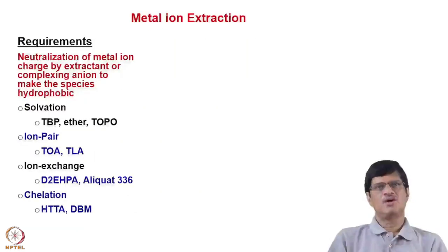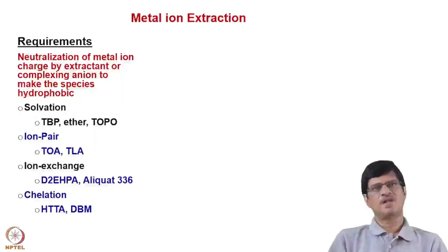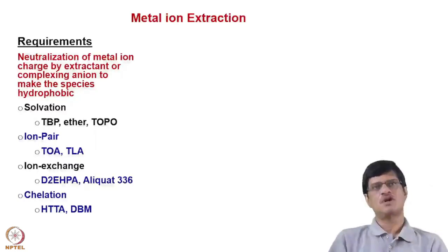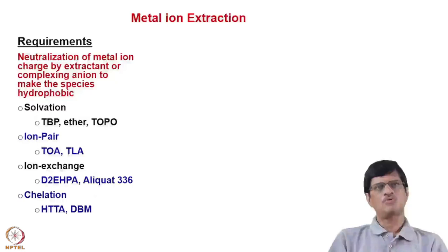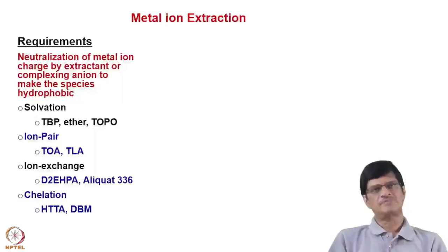For metal ion extraction, a key requirement is that we need to neutralize the metal ion charge because charged metal species are not partitioned into the organic phase; they are mostly present in the aqueous phase. Because of the strong hydration sphere of actinide ions, they can never go into the non-polar organic medium as such. Therefore, the extractant is required to form a complex, and a complexing anion is also needed. For a neutral extractant, a complexing anion like nitrate ion makes the extracted species charge-neutralized, and because of the extractant, the species becomes hydrophobic and gets partitioned into the organic phase.